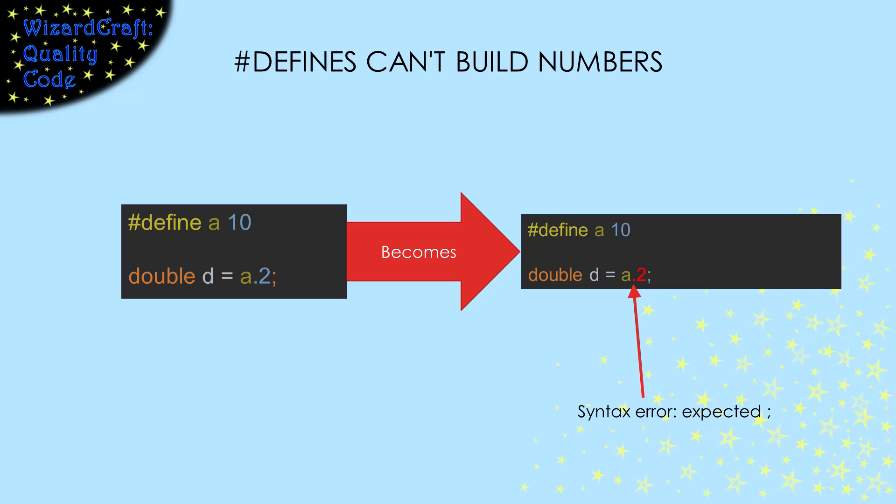One last caveat on pound-defines. You can't use them to build numbers. In this example, I tried to use a pound-define to build the number 10.2. However, the way the preprocessor does the replacement, the compiler will give a syntax error expecting the statement to end before the period. Basically, the rule is that the result of the pound-defines replacement ends a token for the compiler. So that result can't be combined with anything else. Not all pound-define tricks work.